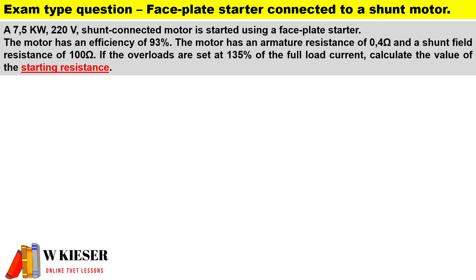Now for this exam type calculation for a faceplate starter connected to a shunt motor: A 7.5 kW, 220V shunt-connected motor is started using a faceplate starter. The motor has an efficiency of 93%, an armature resistance of 0.4Ω, and a shunt field resistance of 100Ω.